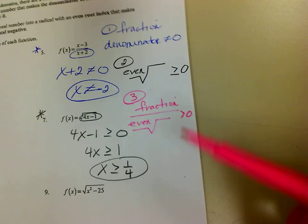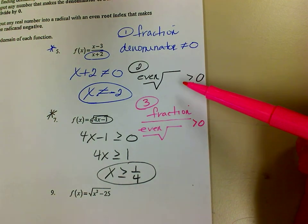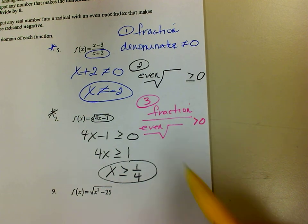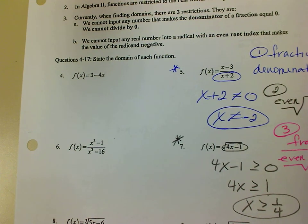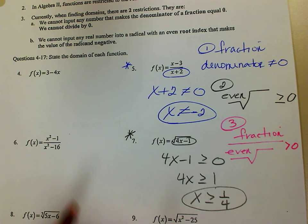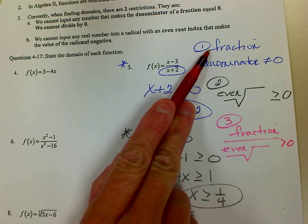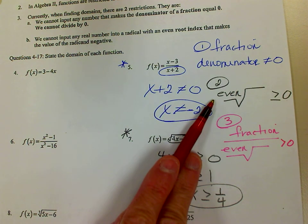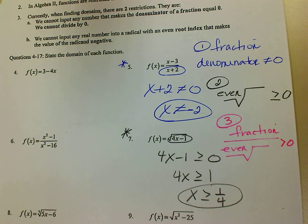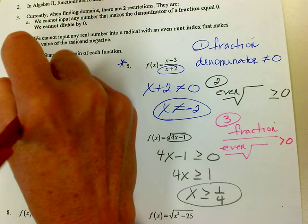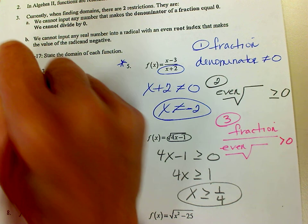So these are the three things to look for. If it's not one of these three things, then your answer is all reals — any number can work. So if I look at number 4, I don't have a fraction, I don't have an even root radical, and I don't have both. So since it's not up there, x can be any number. My domain is all real numbers.